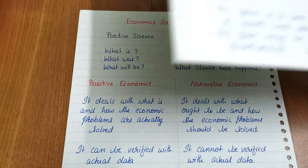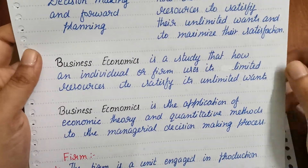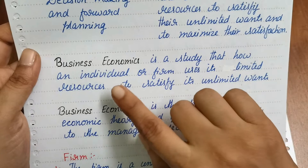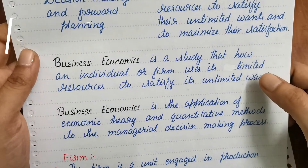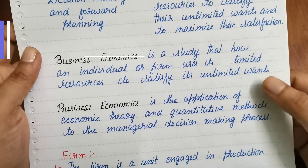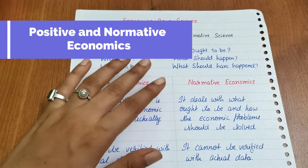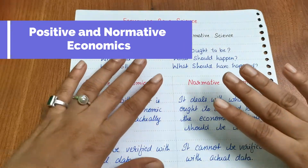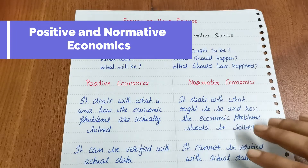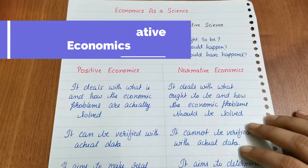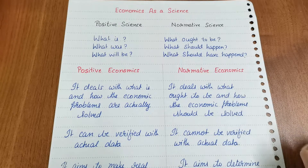Let's start with economics as a science. As we studied previously, business economics is the study of how an individual or firm uses its limited resources to satisfy unlimited wants. Now let us understand economics as a science.